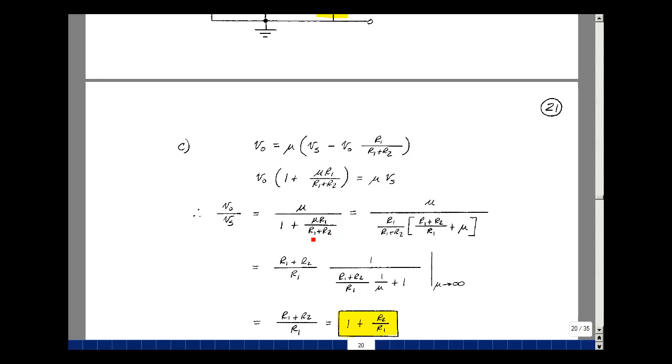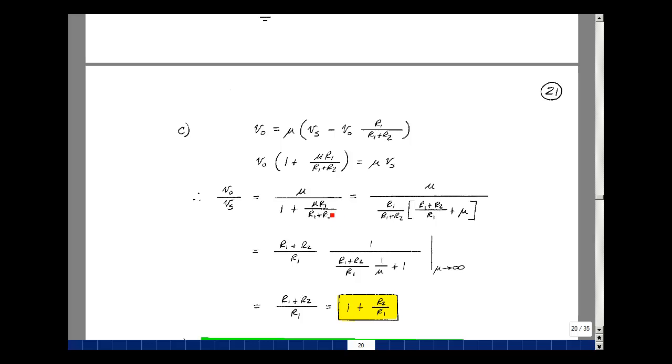So I'll bring this term back over here, so I've got mu, and then divided by 1 plus mu R1 over R1 plus R2. Now normally we would just stop here and evaluate this equation. Let me do some factoring here to show you, when I take the limits, some interesting characteristics. So let me pull out a factor of R1 over R1 plus R2. So all I have left over is mu here.